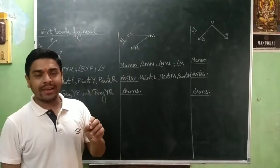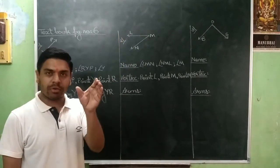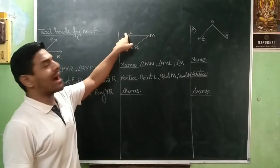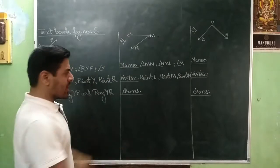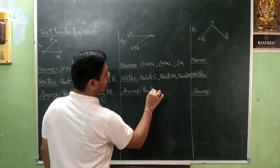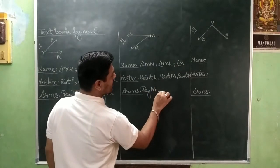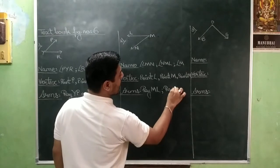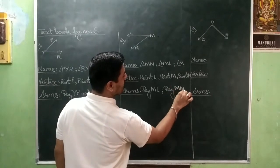So don't change the pattern. This is a custom, this is a tradition that you should always begin with point followed by the arrow alphabet. So here you will be writing ray M, N and ray M, N. Clear?